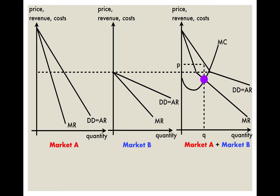If the firm doesn't like losing customers from market B, it can conduct price discrimination. The firm assumes the same cost conditions in both markets — no difference in the cost of serving customers in market A versus market B. With the same marginal cost, the profit-maximizing price and quantity in market A are found where MC intersects MR, giving quantity Q1 and price P1.